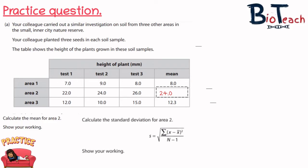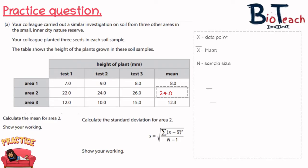The next part of the question asks you to calculate the standard deviation for area number two. The equation for standard deviation shown here is slightly different, so I want to show you how this might vary. The x is the data point, the x-bar is the mean, and n is the sample size — so our sample size here is 3, meaning n minus 1 would be 2.